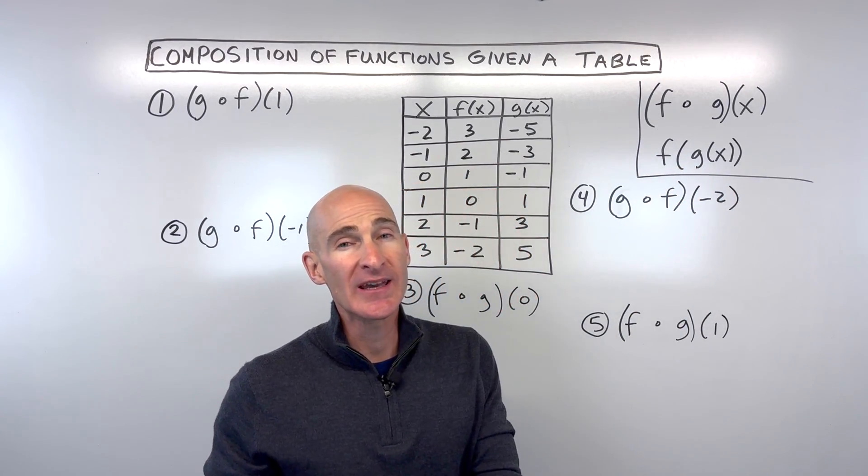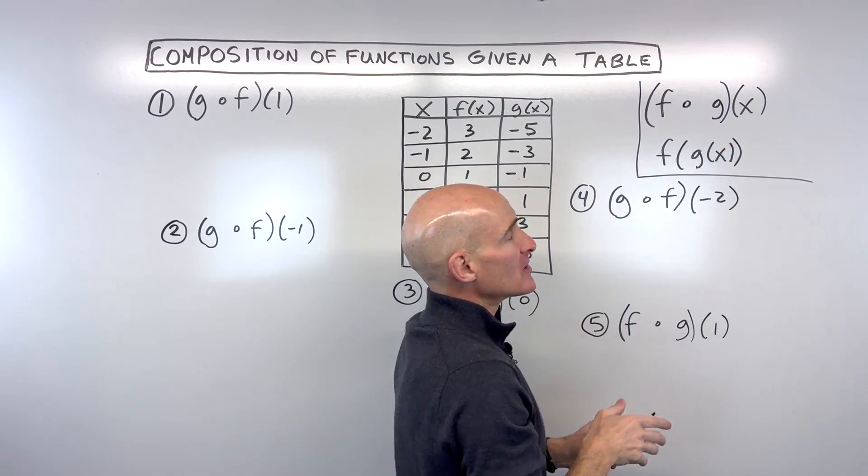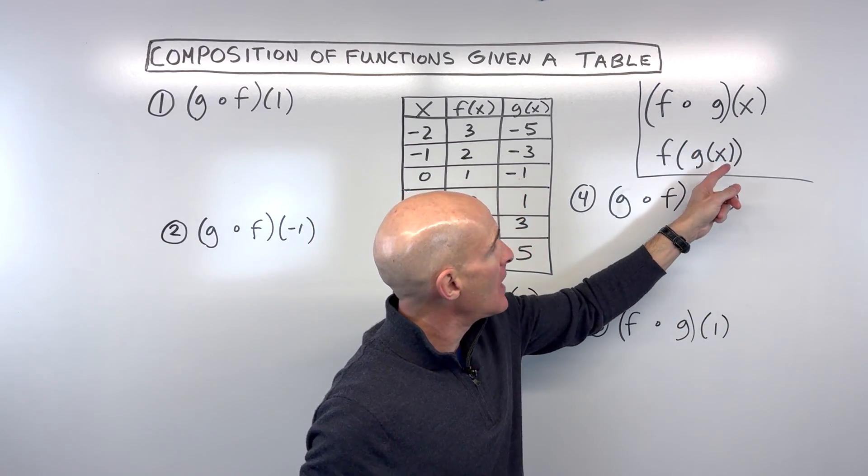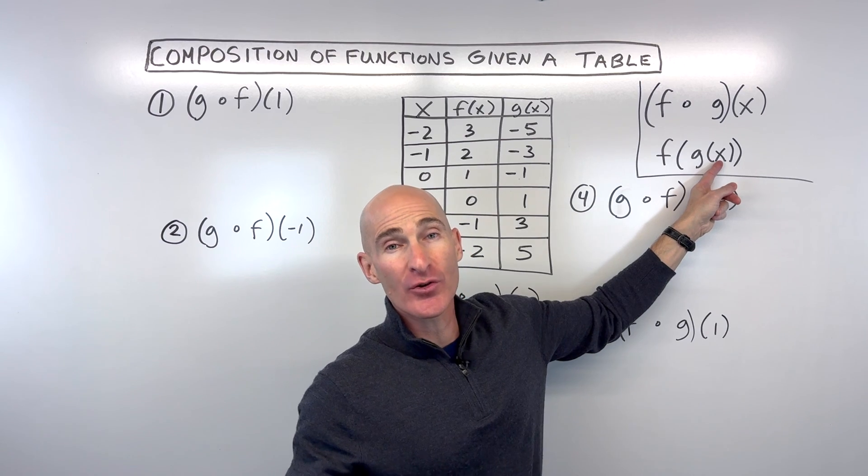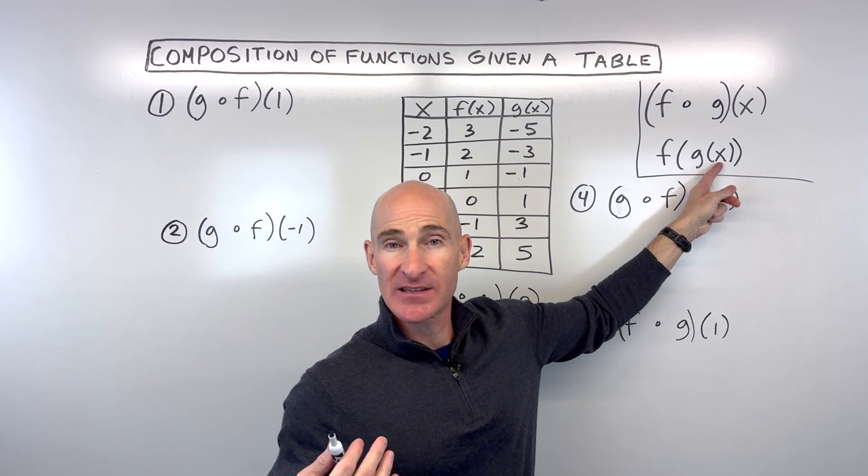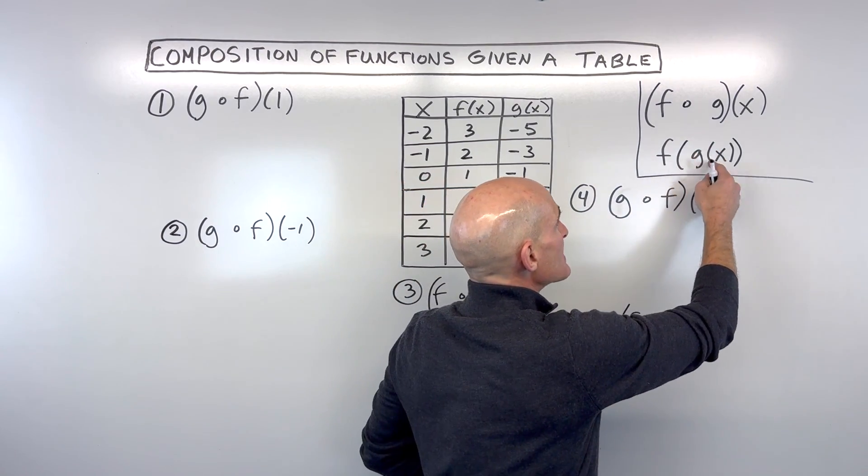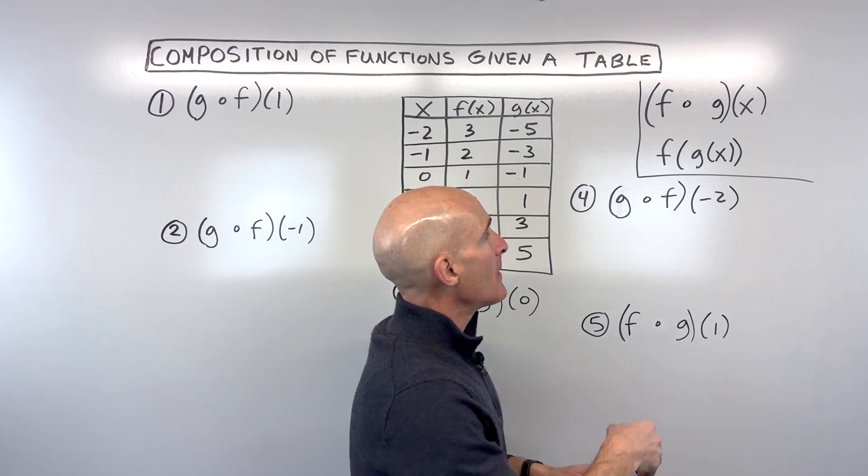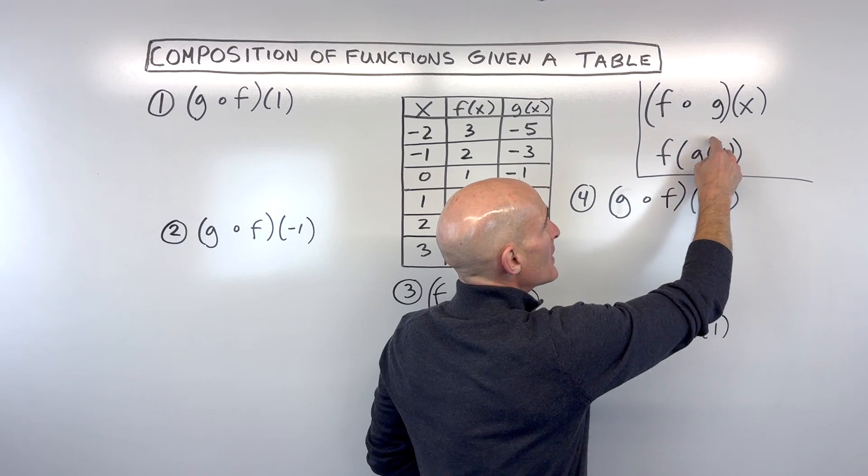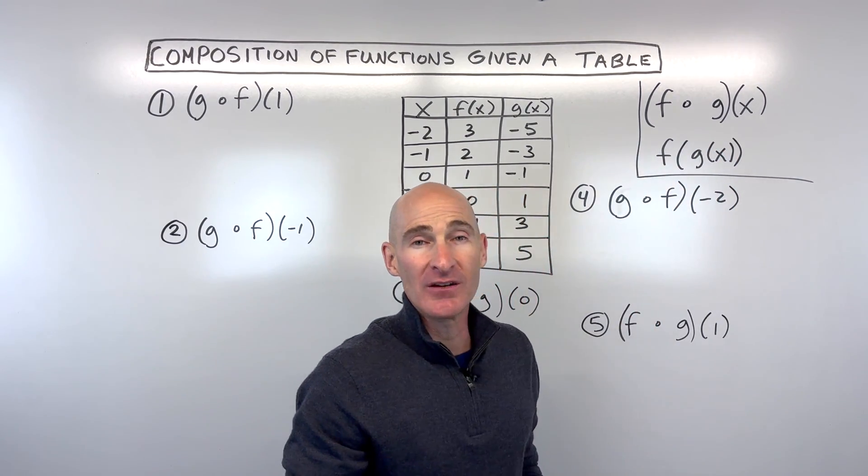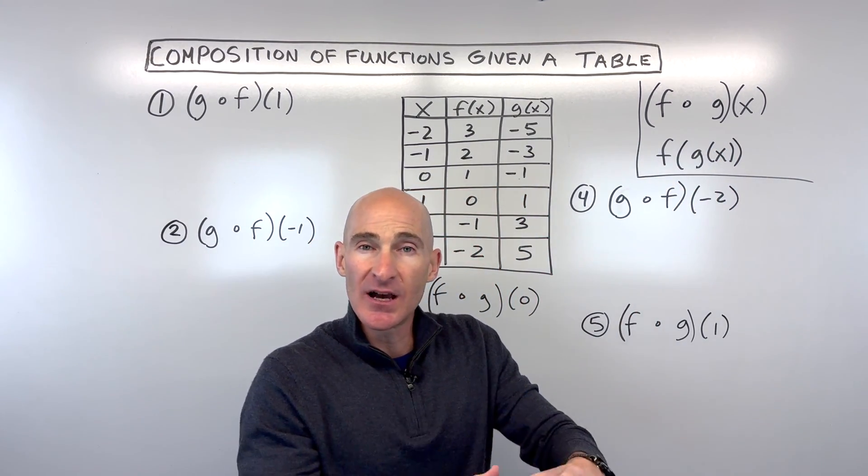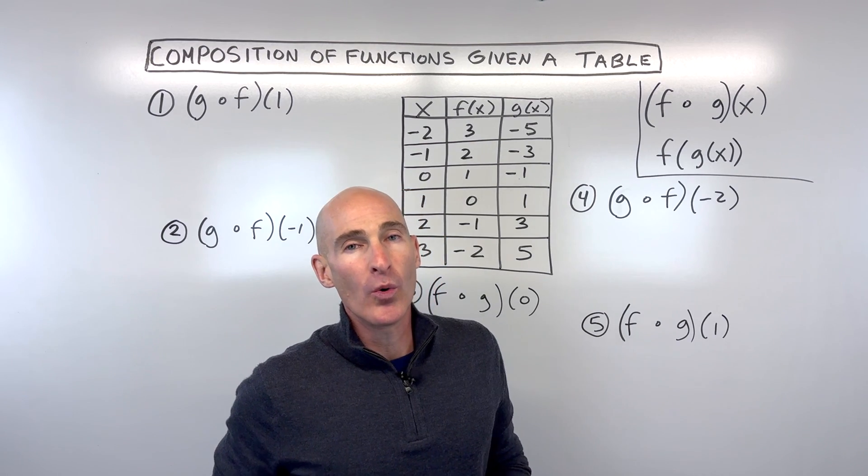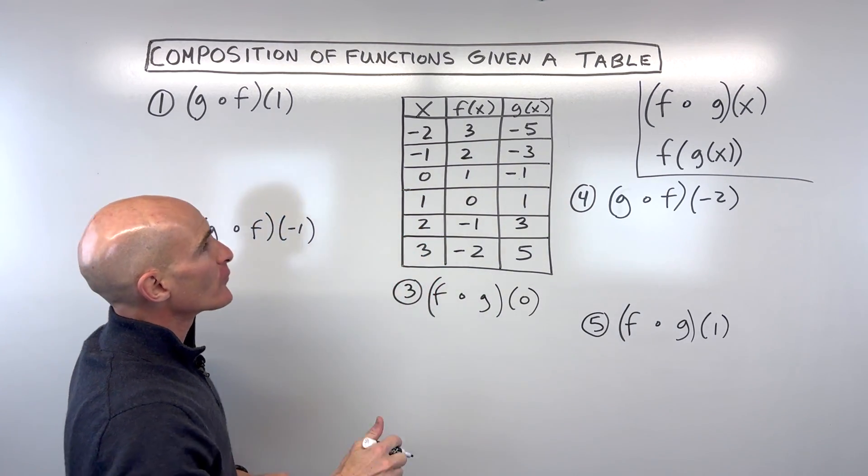Because what you're doing is you're working from the inside out. The way functions work is whatever's in the parentheses is your input. That goes into the function—that's your x value. What comes out is g of x, which is the y value or the answer. You then take that y value as the new input in the f function. So basically, it's like a double substitution. Let's look at some examples, and you'll get a feel for how this works.